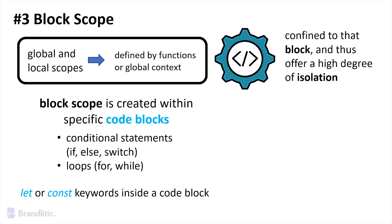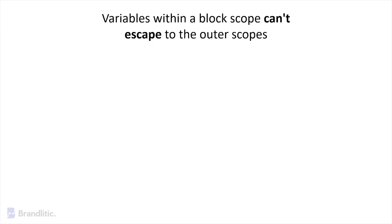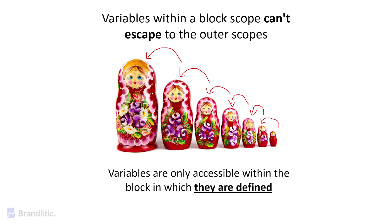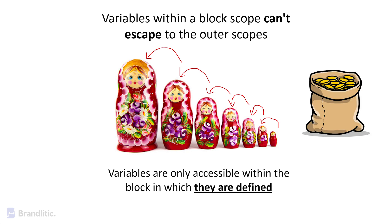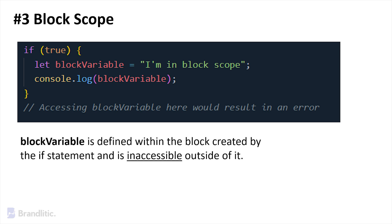To illustrate, imagine a Russian nesting doll. The larger doll represents the global scope, and each smaller doll nested inside represents a block scope. Variables within a block scope can't escape to outer scopes, just as a doll within a doll can't get out. Variables declared in block scope are only accessible within the block in which they are defined — like hidden treasures inside each nesting doll, known and accessible only within their respective compartments. Here's an example using block scope: the block variable is defined within the block created by the if statement and is inaccessible outside of it.